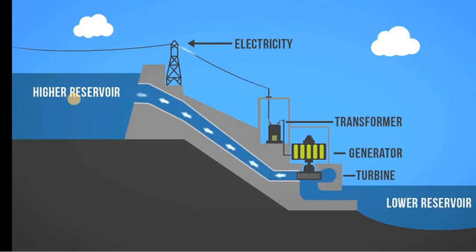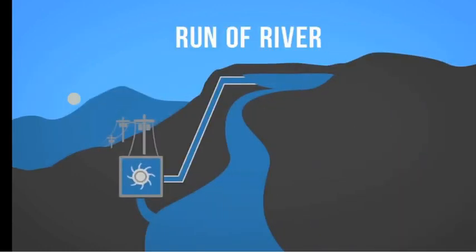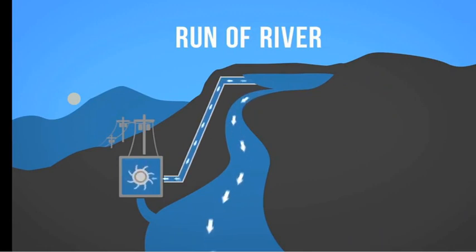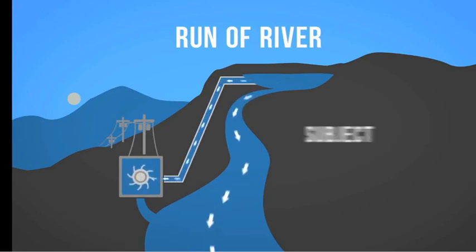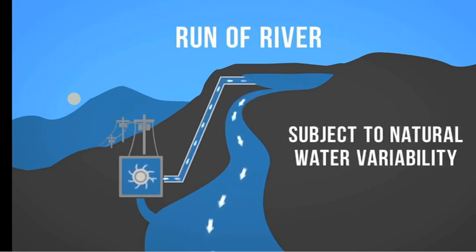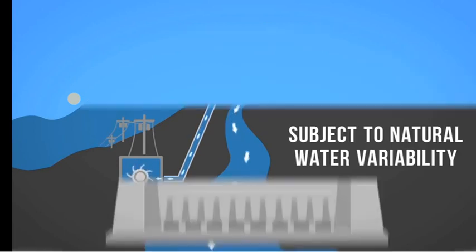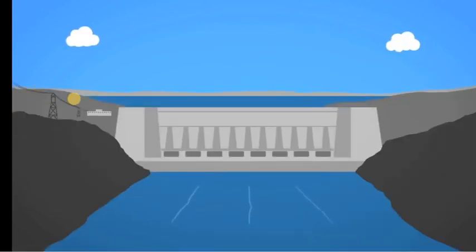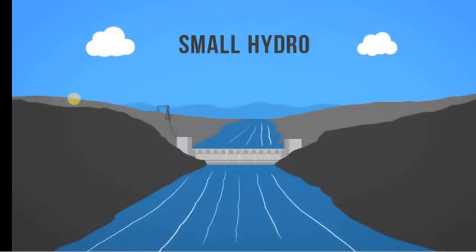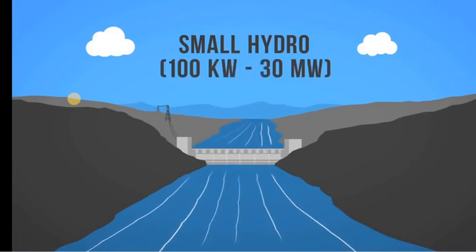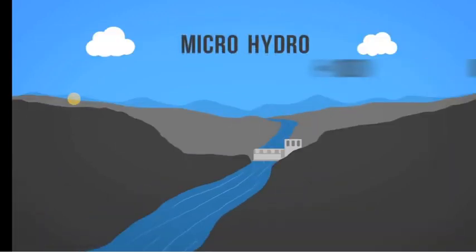The second form of hydroelectricity production is run-of-river hydro, which still uses turbines and generators but relies on the natural water flow rates of rivers, diverting just a portion of the water through turbines. Because run-of-river hydro is subject to natural water variability, it is more intermittent than dammed hydro. There are various sizes of hydro plants: large hydro — greater than 30 megawatts; small hydro — 100 kilowatts to 30 megawatts; and micro hydro — less than 100 kilowatts.